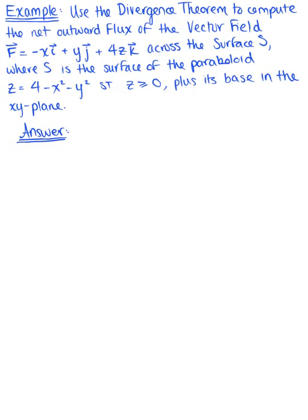Use the divergence theorem to compute the net outward flux for the given vector field across the given surface. We have a vector field F defined by the components minus x, y, 4z. Since we want to use the divergence theorem to compute the net outward flux, we need the divergence of our vector field.